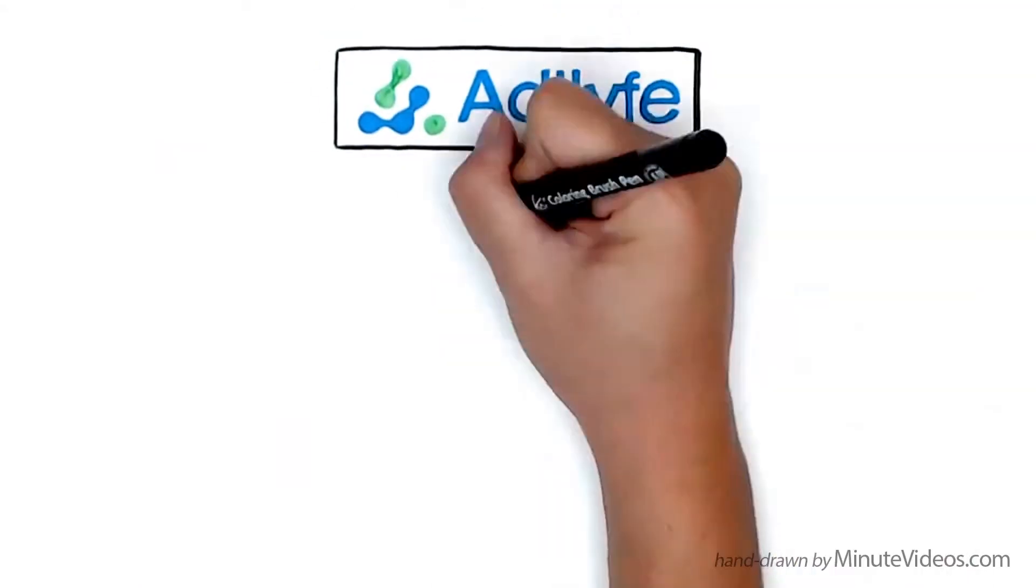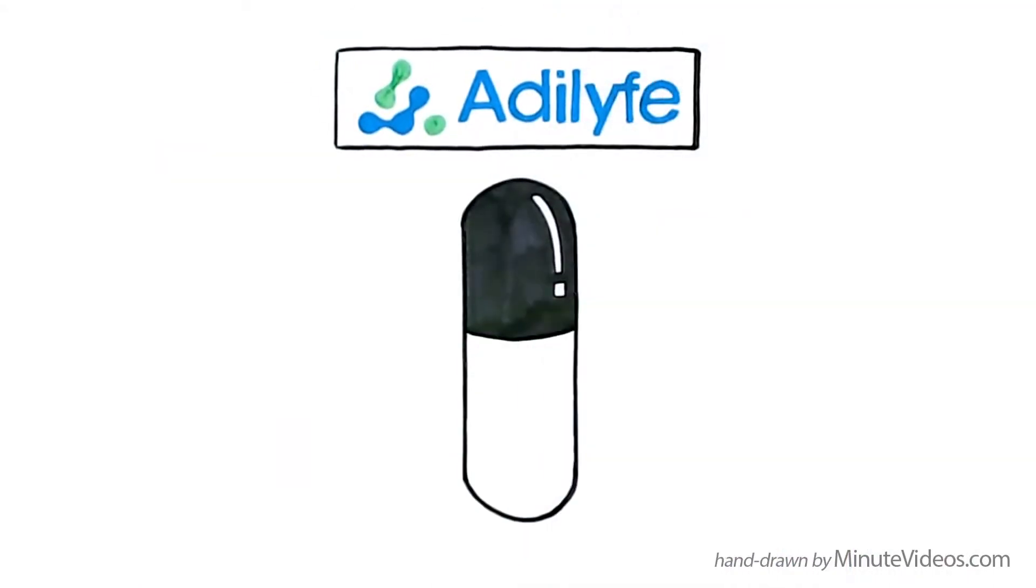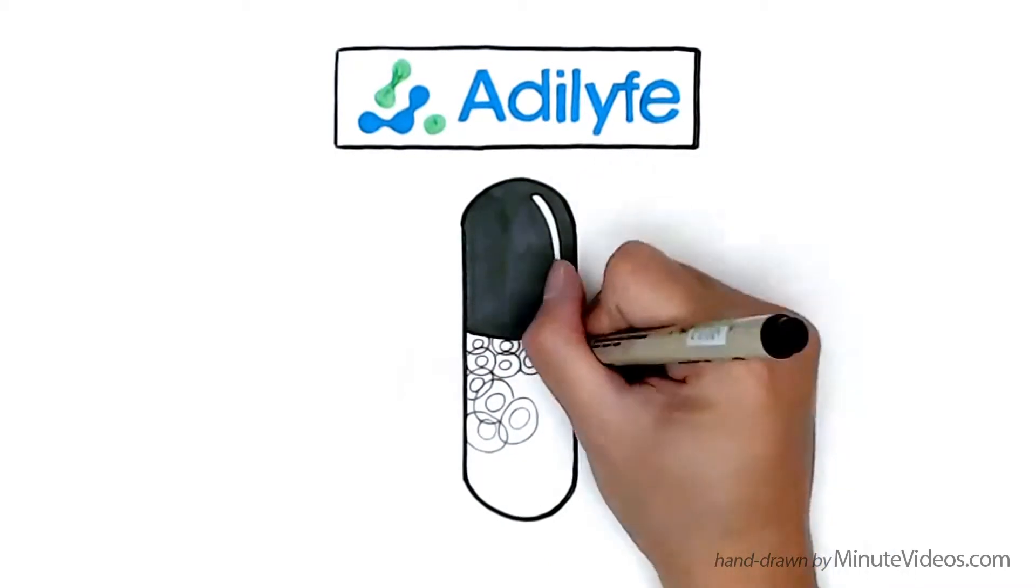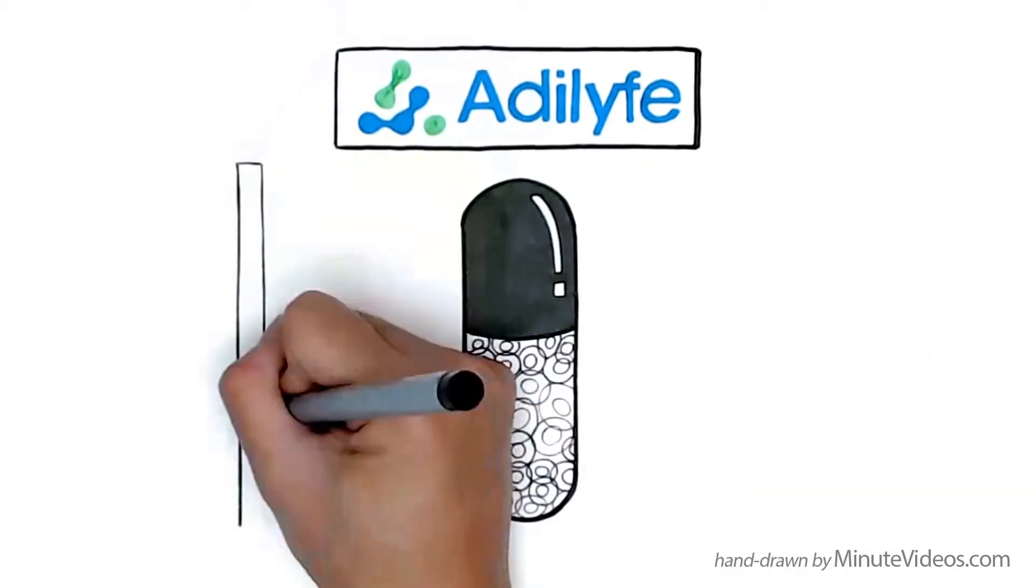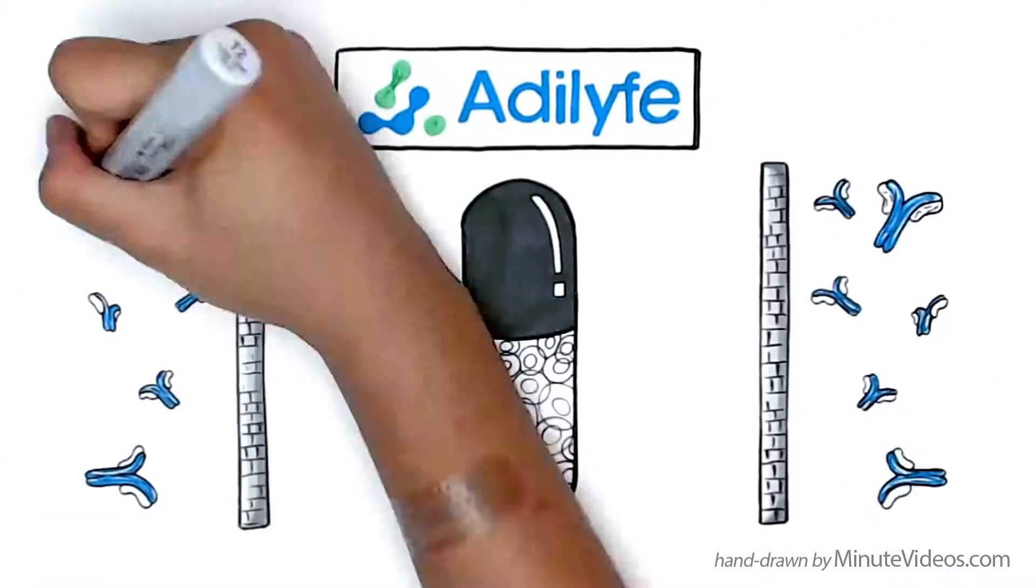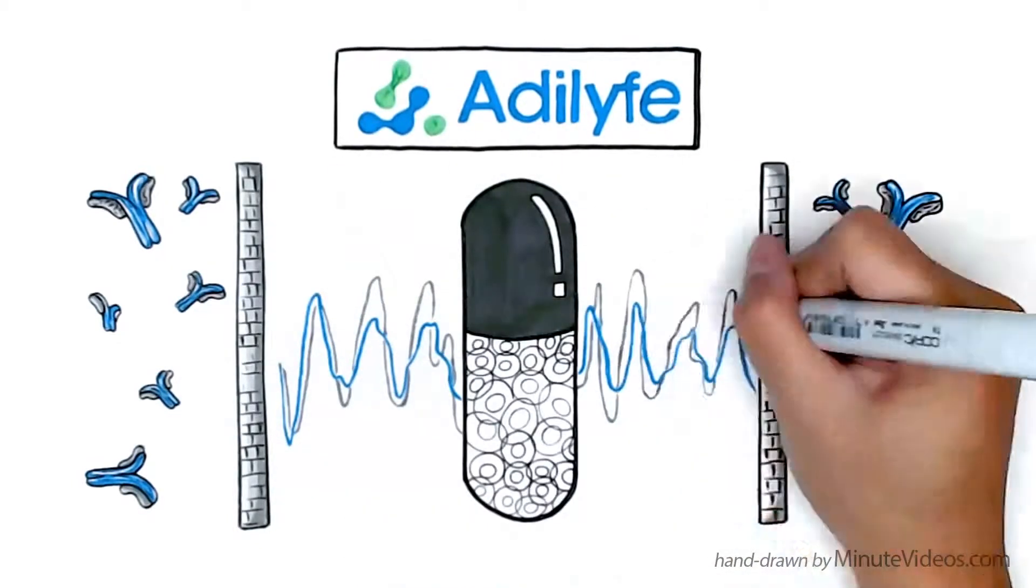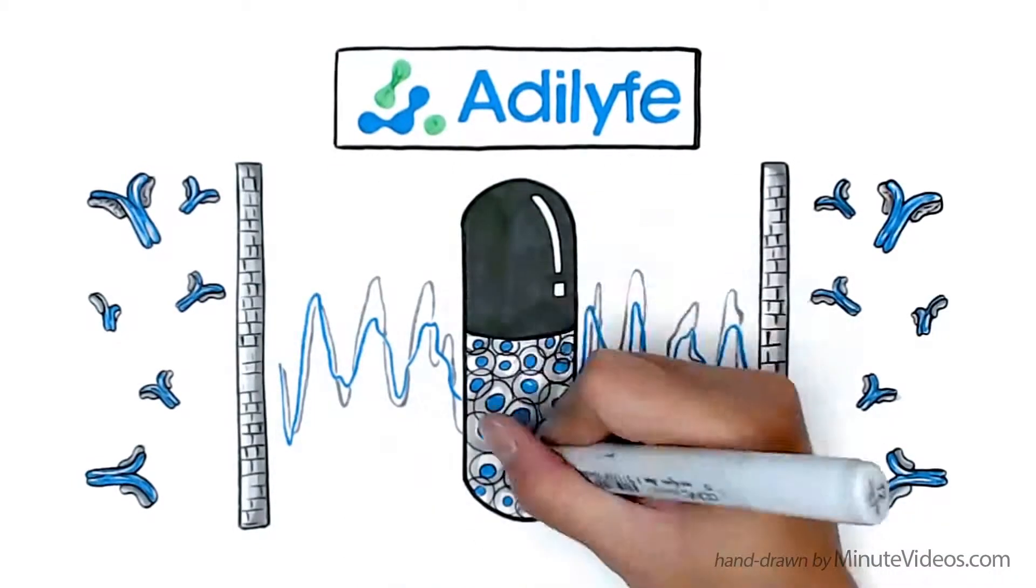Other Adalife techniques include cell encapsulation, which delivers the stem cell inside alginate capsules to protect them against antibodies, and the use of acoustic shock waves to enhance their proliferation and retention.